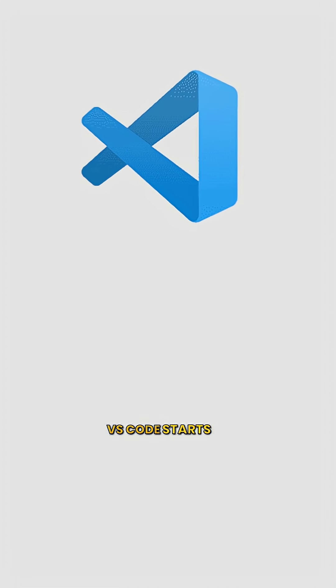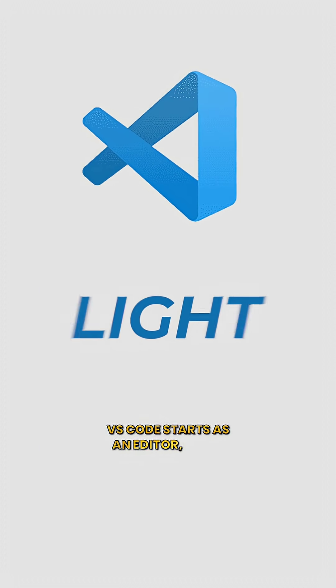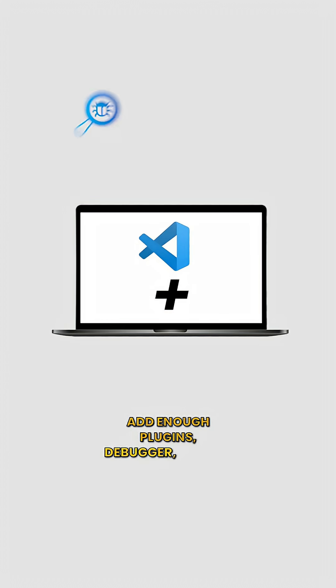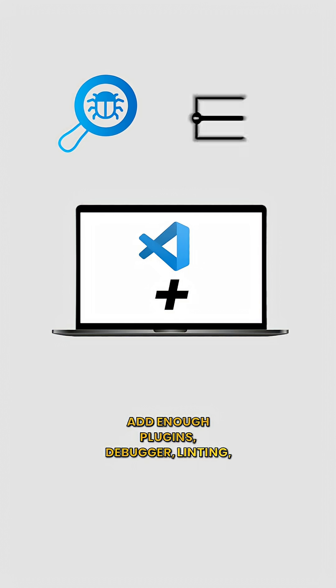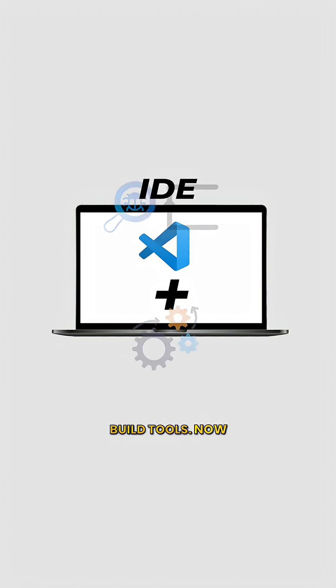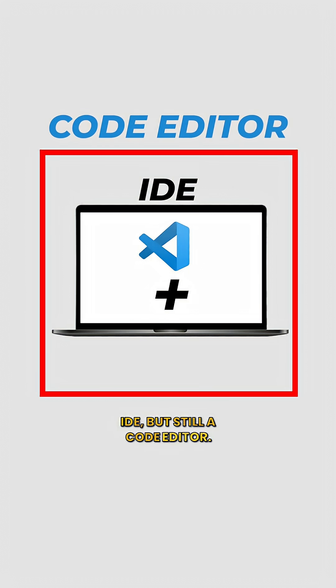VS Code starts as an editor — light, flexible. Add enough plugins: debugger, linting, build tools. Now it acts like an IDE, but it's still a code editor.